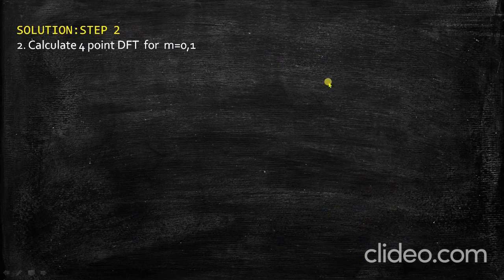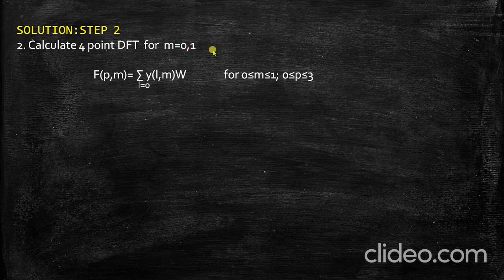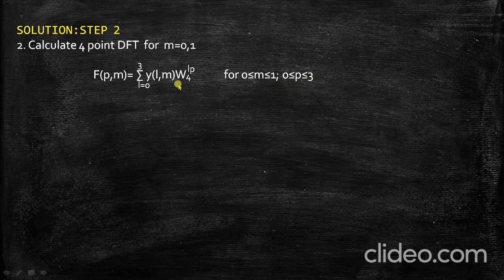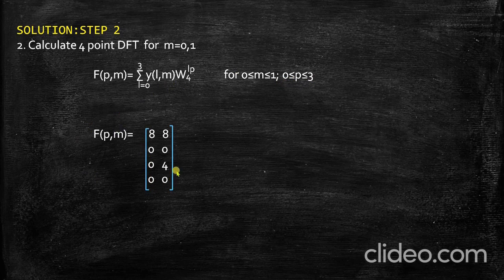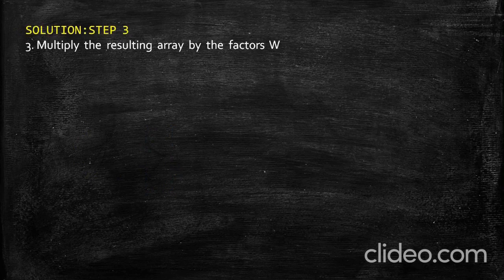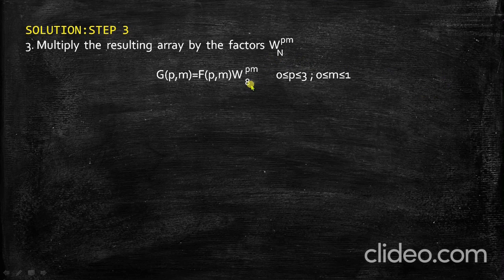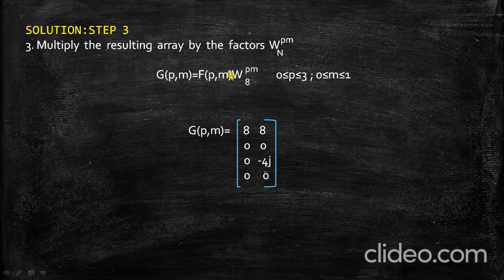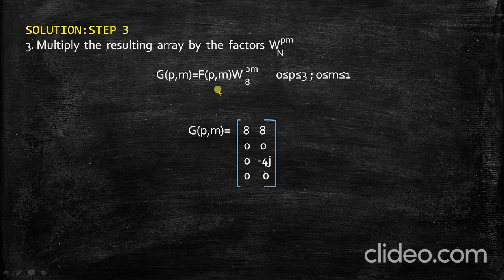The next step is to calculate the L-point DFT for each column. Since L=4, we calculate the 4-point DFT for M=0 and M=1. The equation is capital F of P, M equals sigma over L from 0 to 3 of y(L,M) times W_4^LP, where M takes values 0 to 1 and P takes values 0 to 3. Once computed, we obtain the resulting matrix. The next step is to multiply by the twiddle factors W_N^PM. With capital N=8, and P from 0 to 3 and M from 0 to 1, we obtain the matrix capital G.